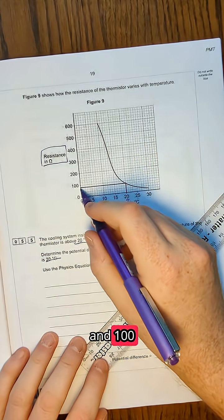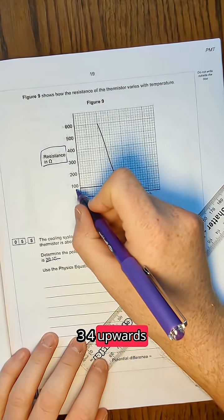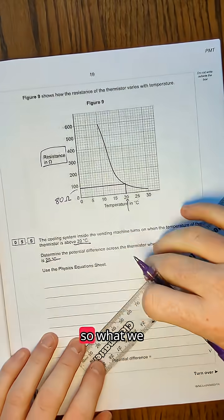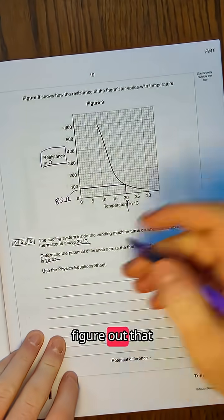There are five squares between zero and 100. So it's one, two, three, four upwards. So this is 80 ohms.